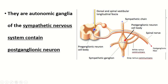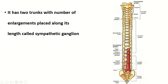This is the location of the preganglionic sympathetic neuron at the lateral horn of the gray matter of the spinal cord. This is the location of the postganglionic neuron of the sympathetic nervous system. The sympathetic chain ganglion has two trunks, with a number of enlargements known as the sympathetic ganglia.